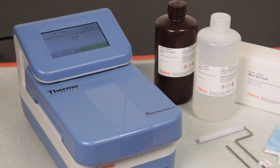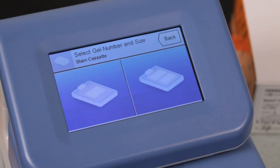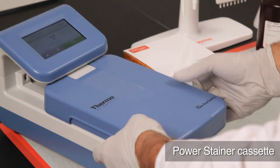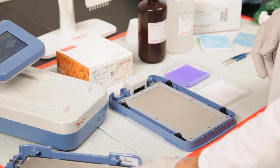The stainer consists of a standalone control unit with a color LCD touch screen and a removable stain cassette that houses the platinum coated titanium anode and the stainless steel cathode.